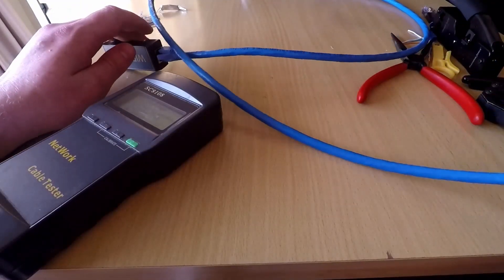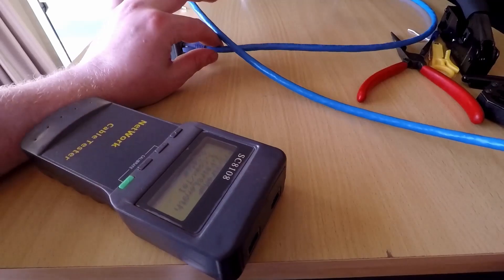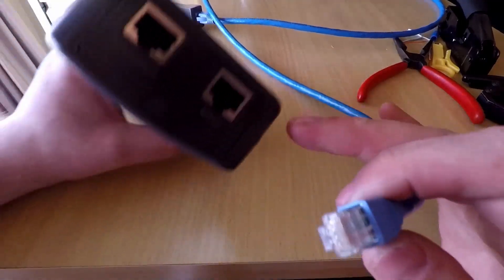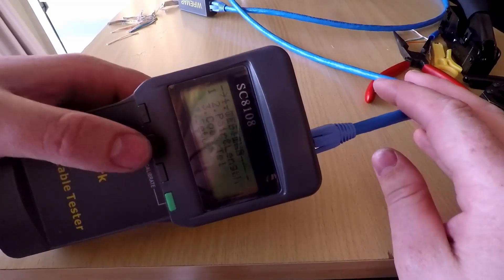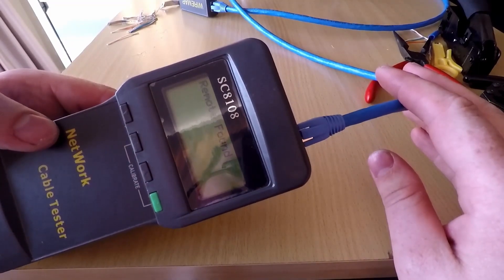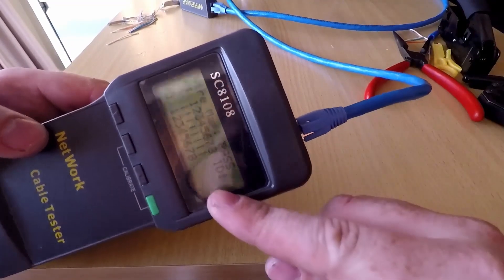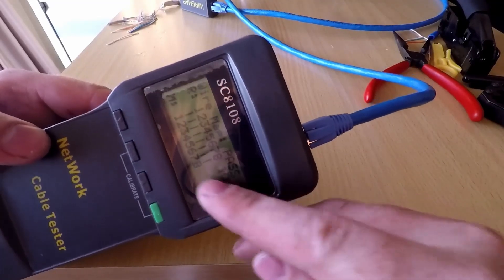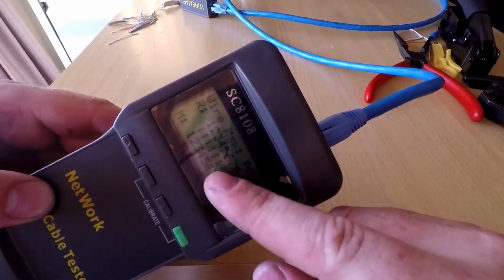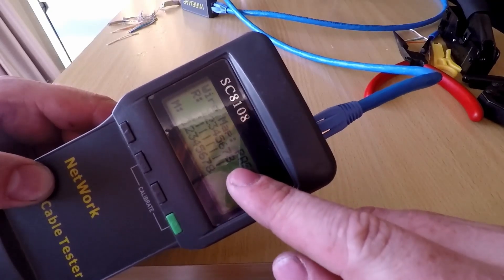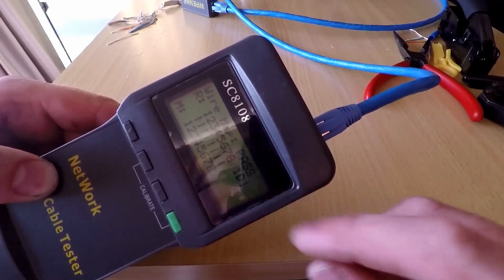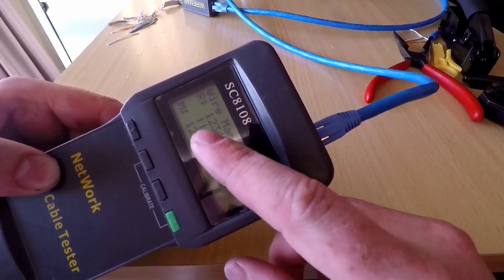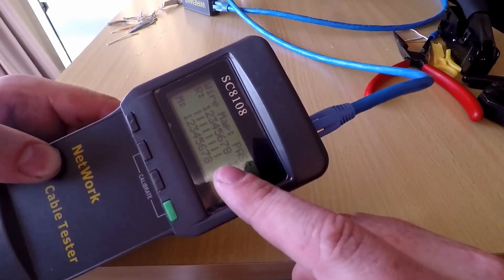So, once you've got both ends done, plug one end into one end of your tester and then the other end into the main port. And then do your wire map. And there we go. Pass. So, this here tells you that all of your cores are corresponding at both ends. So, each one meets up to exactly what number it is meant to. And that there are no breaks in the cable here. If there was a broken end, there would be a cross here. Or if there was cores that were in the wrong order, then the numbers would be around the wrong way.